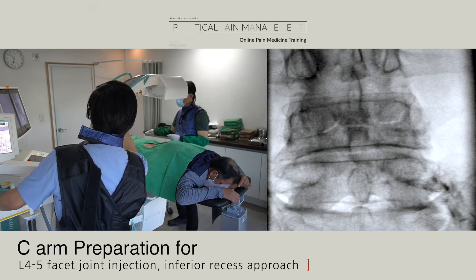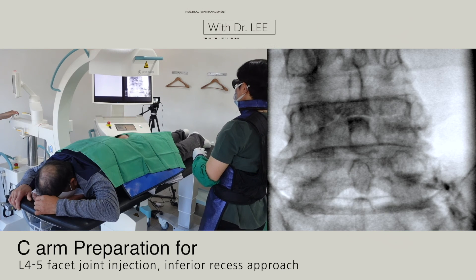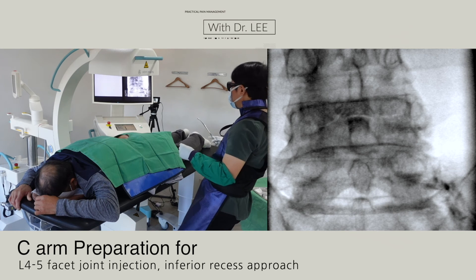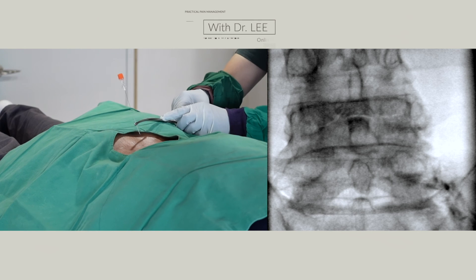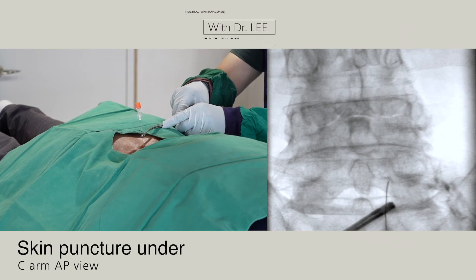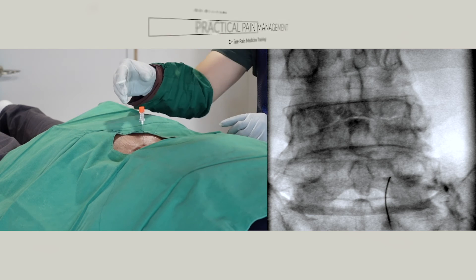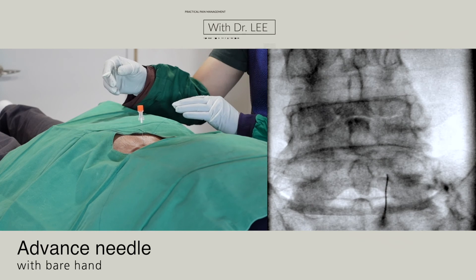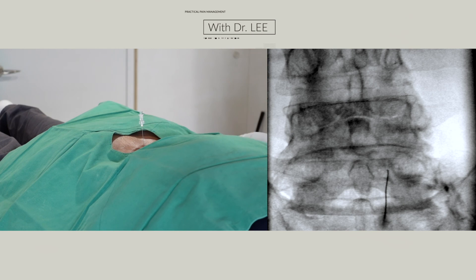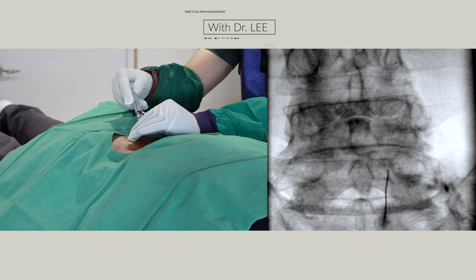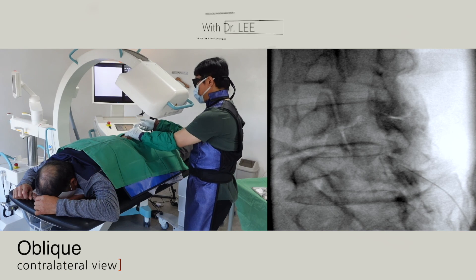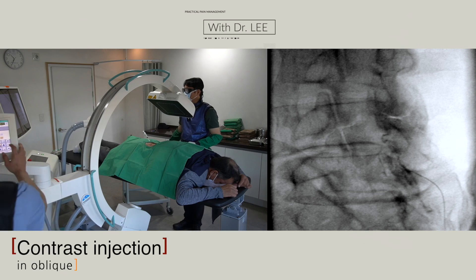I'm going to select the inferior recess for the right L4-5 facet joint injection. Skin puncture under C-arm AP view. Advance needle with bare hand. Oblique contralateral view to confirm the needle depth. Contrast injection in oblique contralateral view.